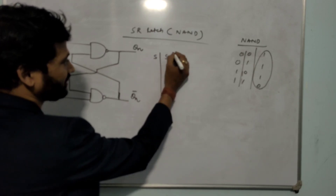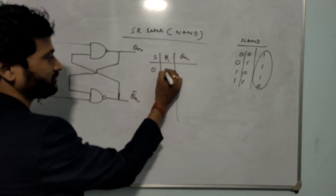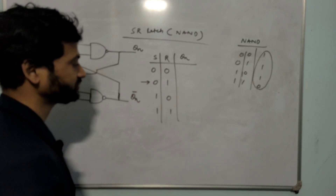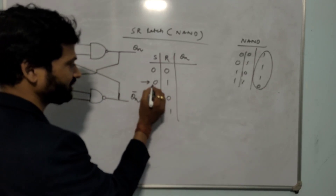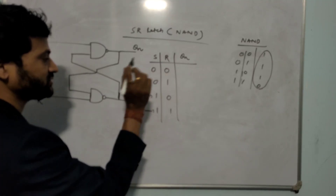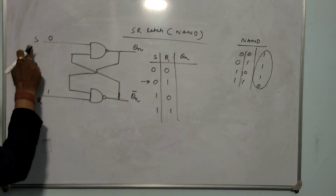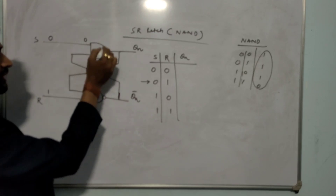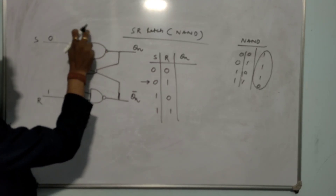The inputs are S and R, and the output is Qn. There are four input combinations: 00, 01, 10, and 11. We start with S=0, R=1. Coming to the first NAND gate — if any one of the input is 0, the output is 1. So with S=0, regardless of the other input, the output of the first gate is 1.